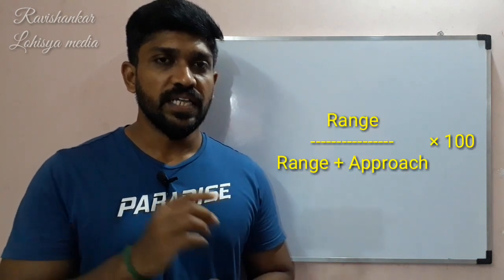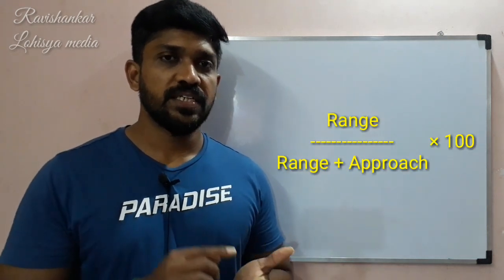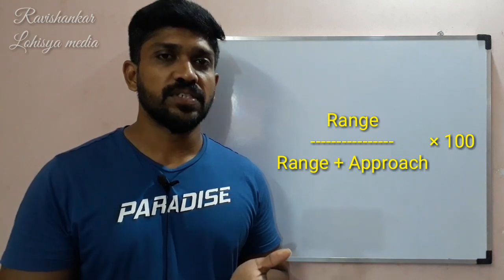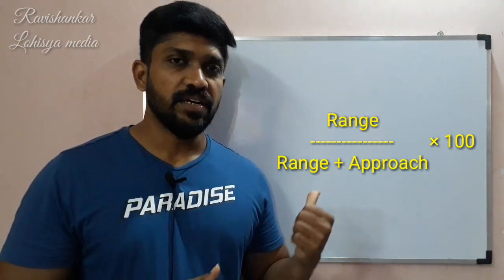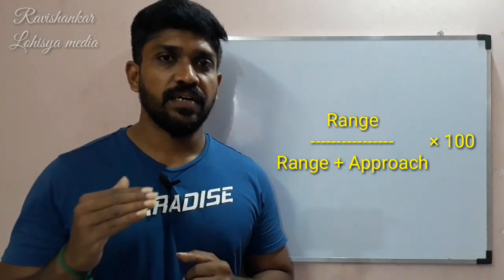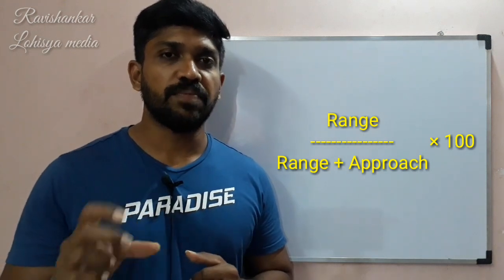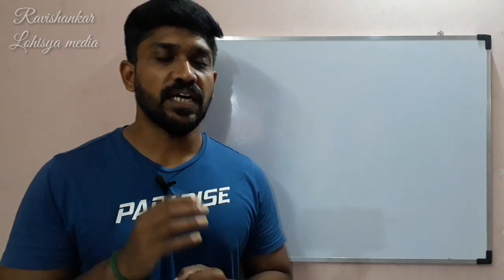This is the range-approach method. To calculate it: Range divided by (Range plus Approach) into 100. This is the cooling tower effectiveness formula.